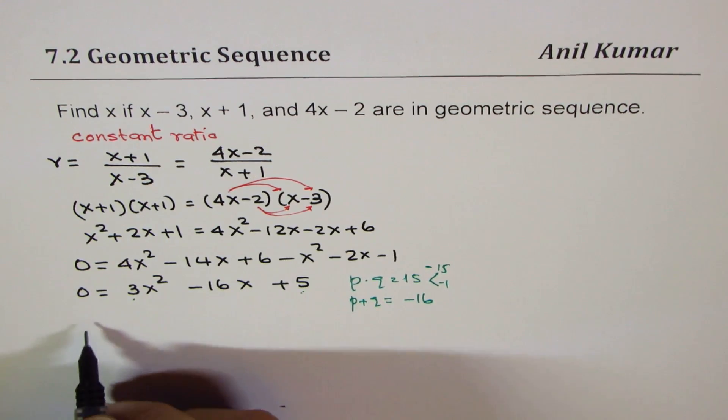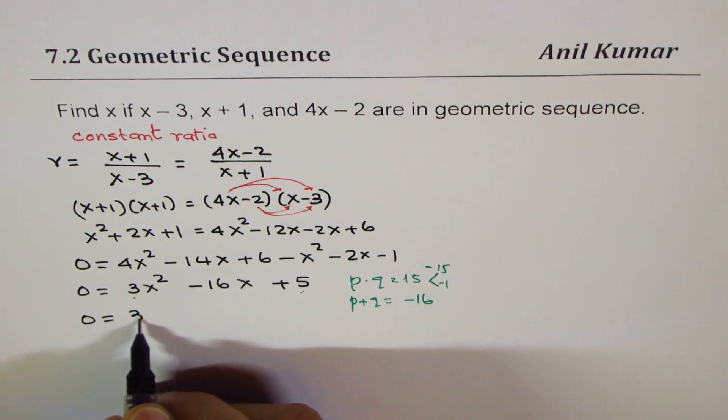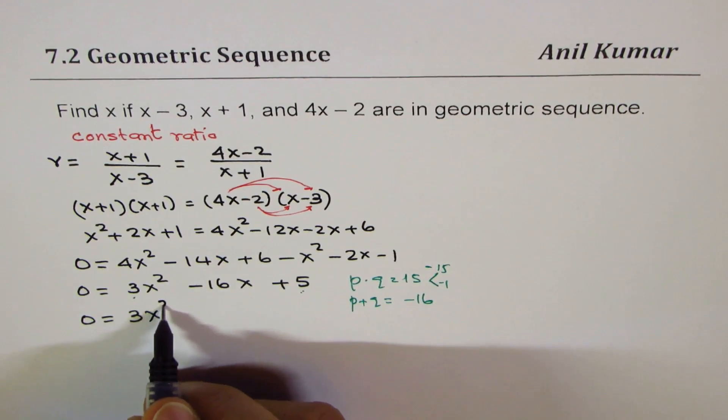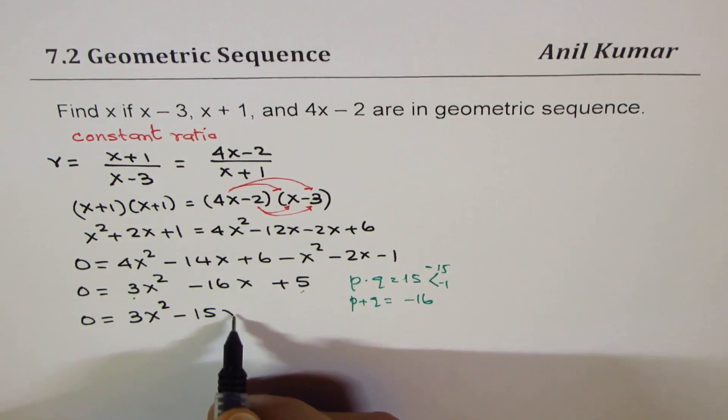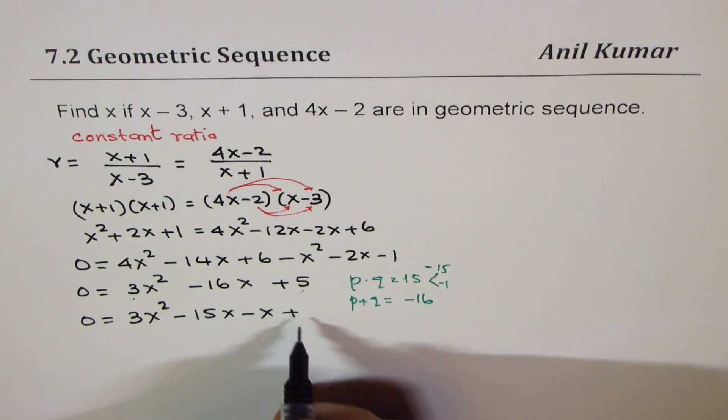So we split -16x and write this as a combination of those two: 3x² - 15x - x + 5.